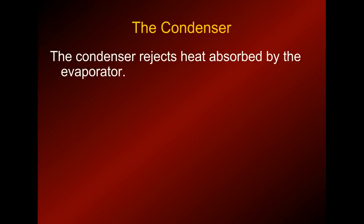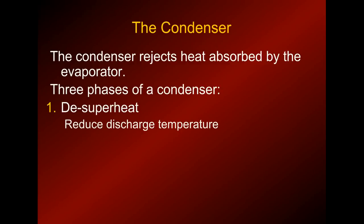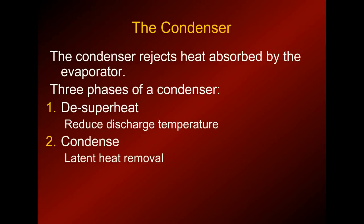So the condenser of course rejects the heat absorbed by the evaporator — it's kind of the reverse process. When we get into the condensing side of the circuit, the first part is de-superheating, which reduces the discharge gas temperature from the compressor. That's sensible heat. Then it condenses from vapor to liquid, which is a latent heat removal, and that's where most of the heat is rejected — in fact, about 99% of where the heat is rejected.